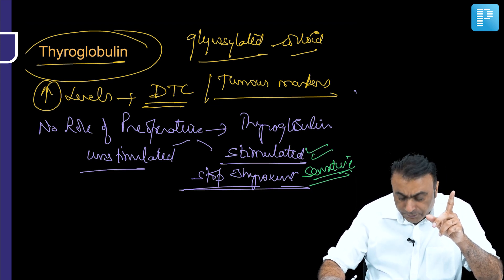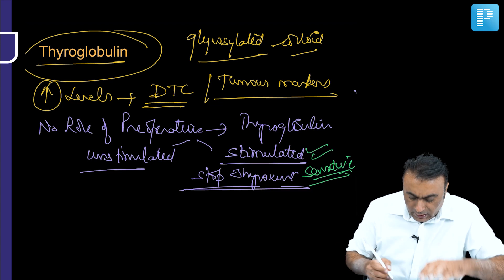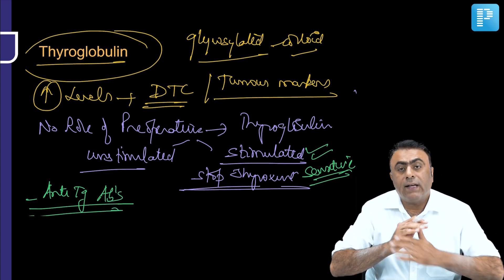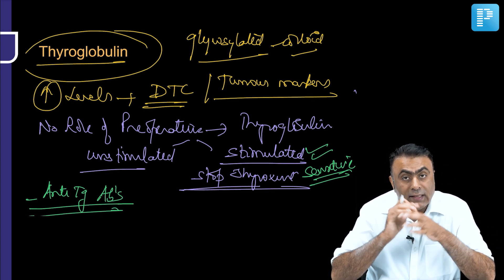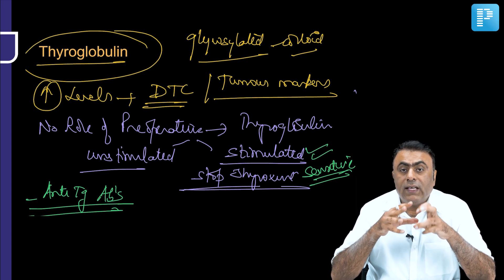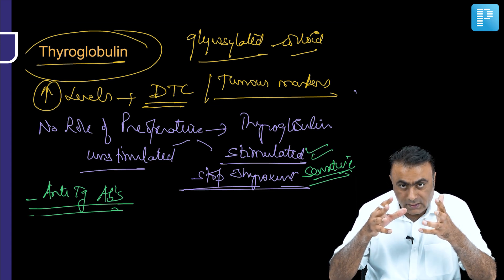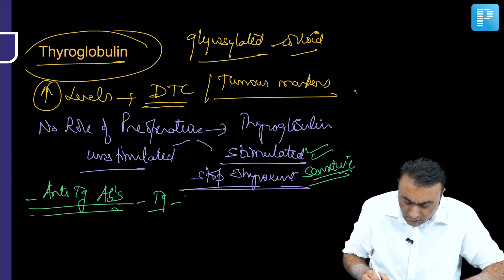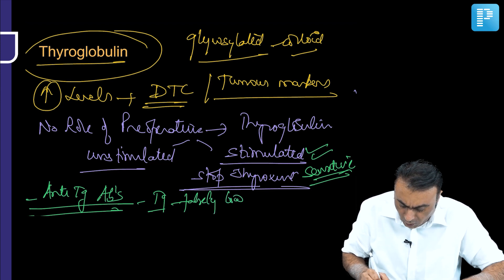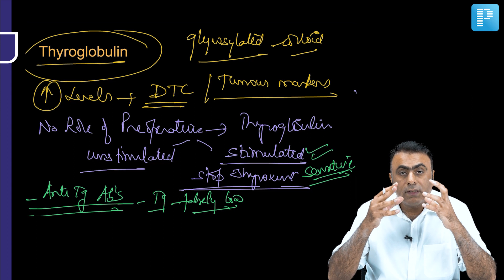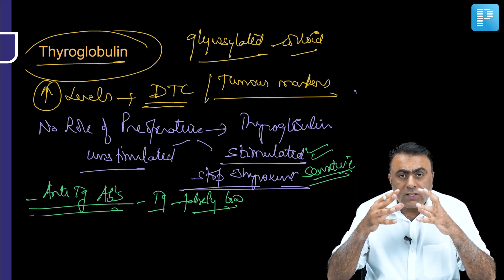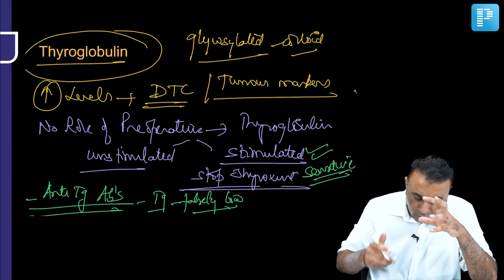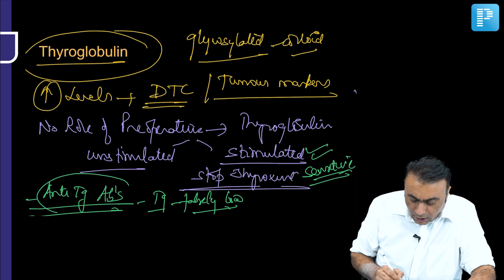A third important point regarding thyroglobulin: some patients have antithyroglobulin antibodies, which can interfere with the measurement of thyroglobulin levels, causing falsely low values. Therefore, whenever we measure thyroglobulin levels in the postoperative or follow-up period, we should always check for antithyroglobulin antibodies simultaneously.